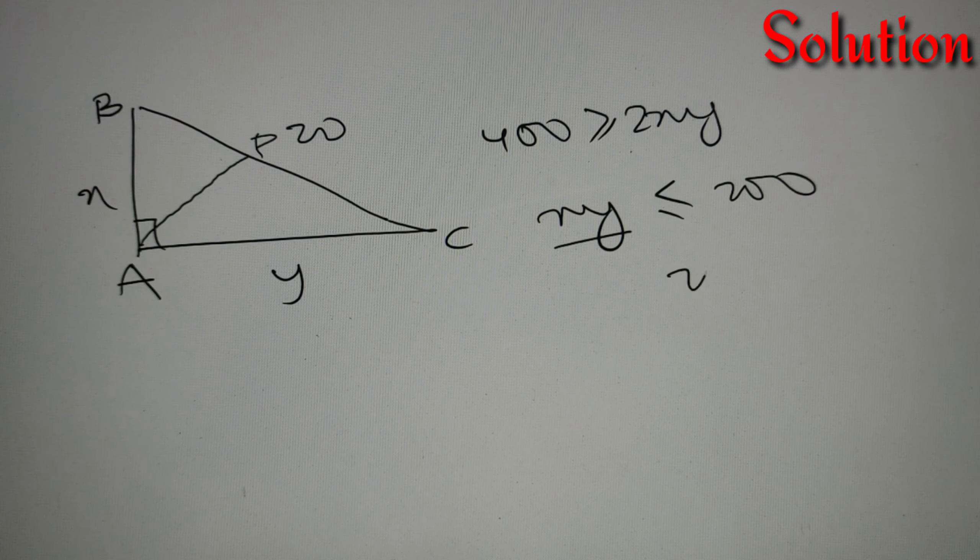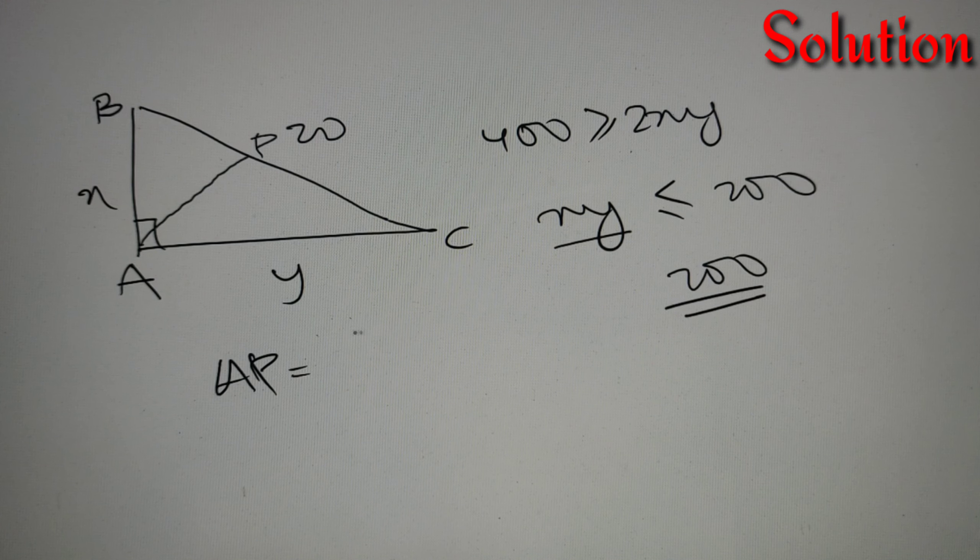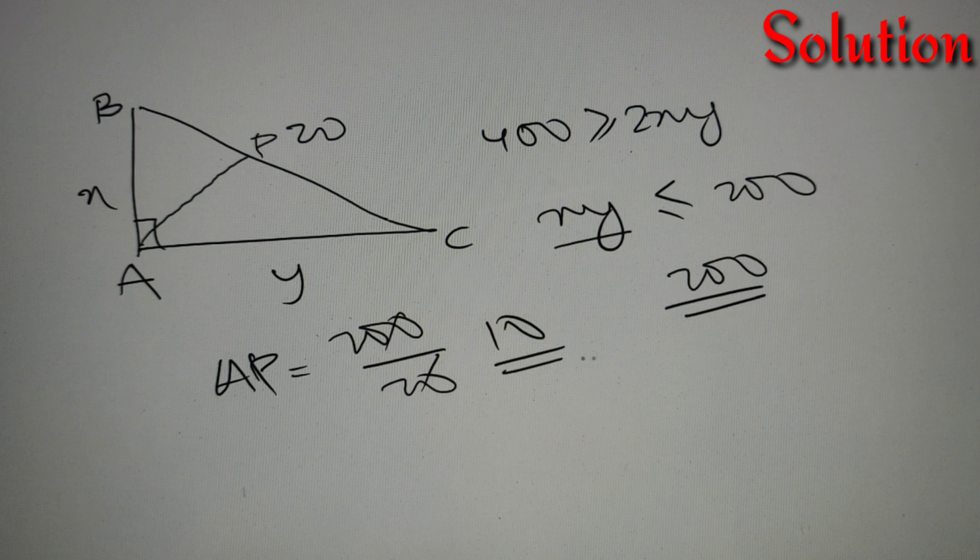The maximum value of AP will happen at the maximum value of XY which is 200, so that equals 200 by 20. The maximum value is equal to 10. Now 10 is our option D, so the final answer is option D. This is how we use Pythagoras theorem and AM is greater than GM inequality to find our answer.